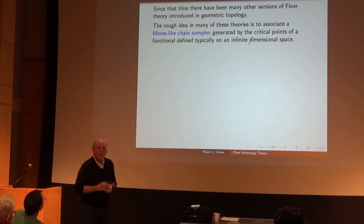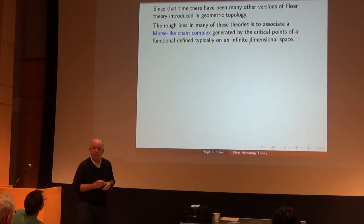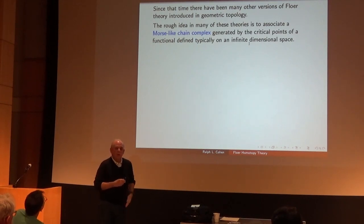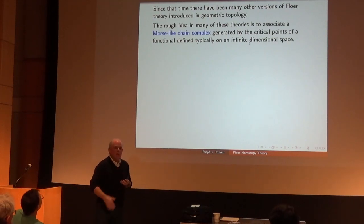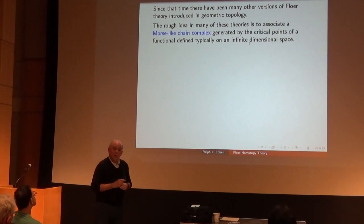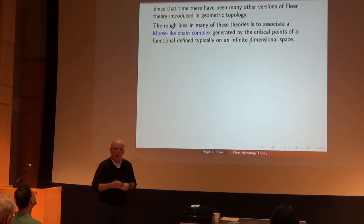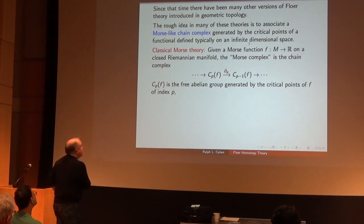The rough idea in most of these theories is to describe a Morse-like chain complex generated by critical points, with boundary homomorphisms determined by flow lines between the critical points — a Morse-like chain complex coming from a functional on typically an infinite-dimensional manifold. A lot of the techniques from classical Morse theory don't necessarily work, so really some new ideas are needed. To describe the problem of realizing Floer homology by a space, let's go back to classical Morse theory.